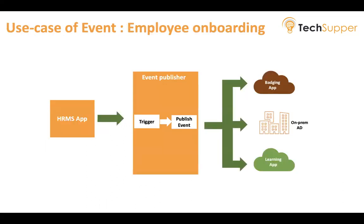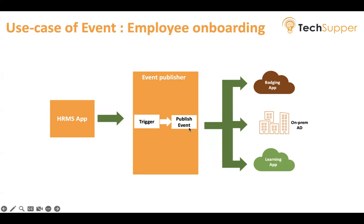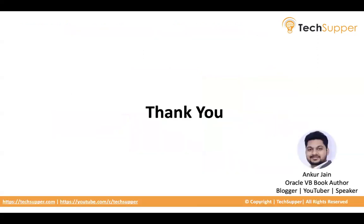A simple use case is employee onboarding. When an employee is onboarded, you want to send employee information to multiple applications at the same time — not one by one, but in parallel. For example, you have an HRMS application where the employee is created; a publisher integration is triggered as soon as the employee is created and publishes the event. You then create three subscribers — a badging app, an on-premises Active Directory, and a learning app — and when the event is published, all three subscribers fire simultaneously. As of now, you can have up to 20 subscribers for a single event. That's all about events in integration.